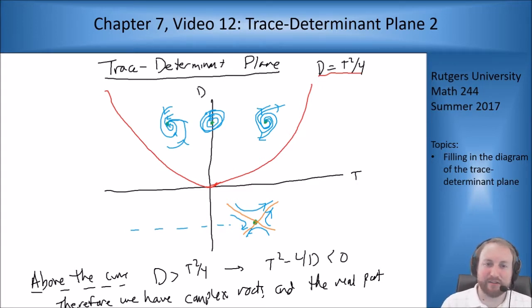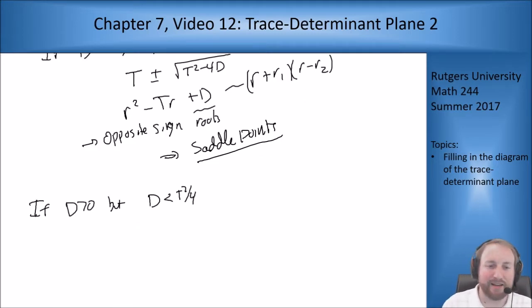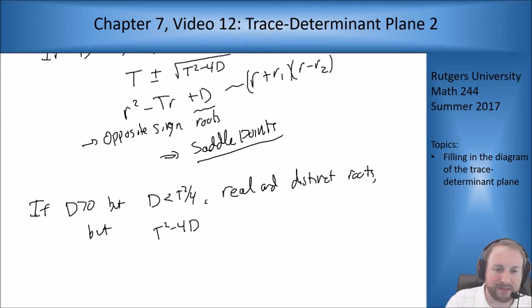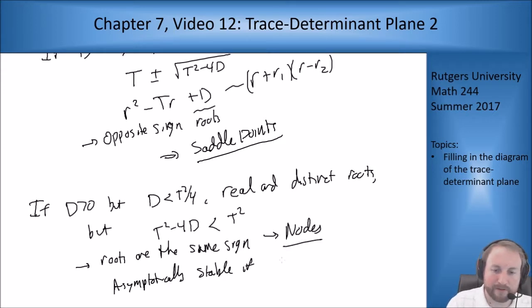And finally, what happens if d is positive, but I am below the curve? Well, in this case, I'm in the opposite case. I am in real and distinct roots again, but I will get that now t squared minus 4d is going to be strictly less than t squared. Which means, because it's strictly less, that means that my roots are going to be the same sign. Because again, if you look up in the above part up here, t squared minus 4d is less than t squared. Then I can't cross over 0 when I add a subtract from t. So this means my roots are the same sign. So these are my nodes. They are asymptotically stable if t is negative. And they are unstable if t is positive, because that will dictate what sign both roots have.